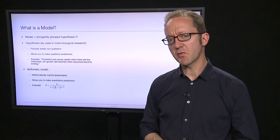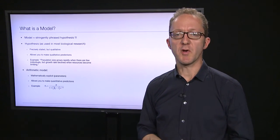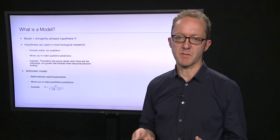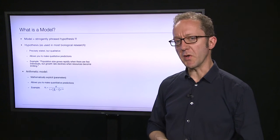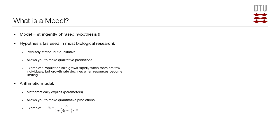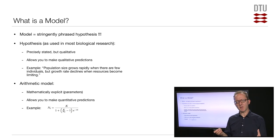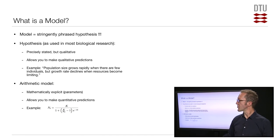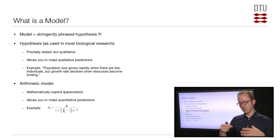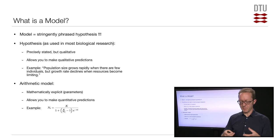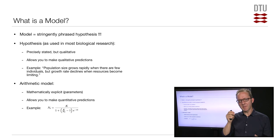This is a good time to make a few comments on the role of modeling in science and in phylogeny more specifically. What is a model? A good way of thinking about it is to see a mathematical model of some system as a stringently phrased hypothesis. Typically, when you do science, you have some data and then construct a hypothesis about the system you're looking at, and those hypotheses will typically be qualitative in nature.